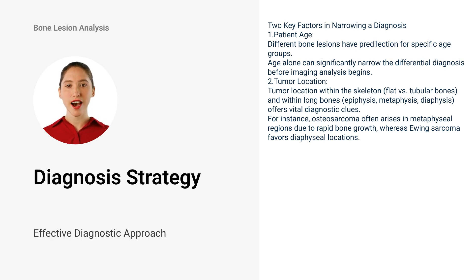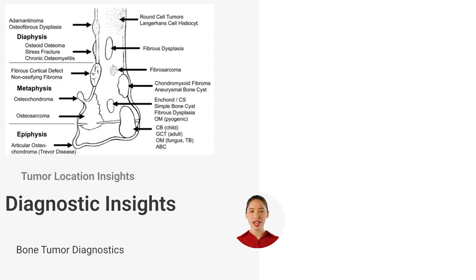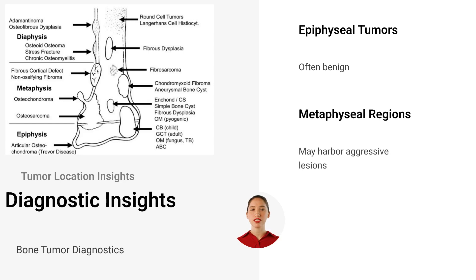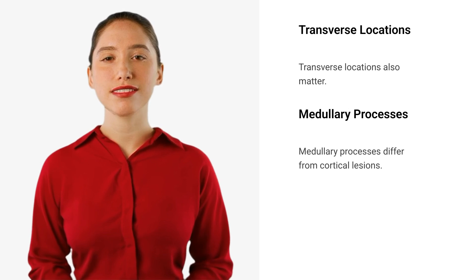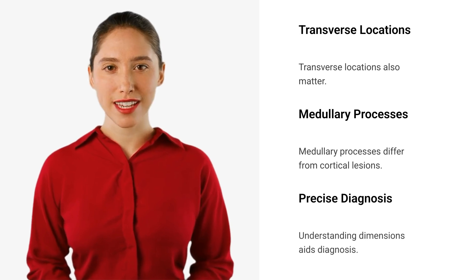Osteosarcoma often arises in metaphyseal regions due to rapid bone growth, whereas Ewing sarcoma favors diaphyseal locations. Tumor location within bones offers diagnostic insights: epiphyseal tumors are often benign, while metaphyseal regions may harbor aggressive lesions. Transverse locations also matter — medullary processes like simple bone cysts differ from cortical surface lesions.